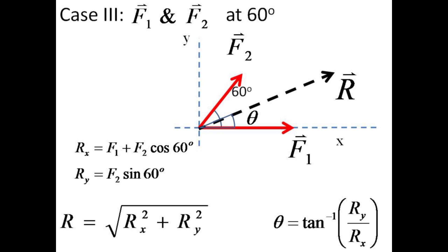Rotate the force F2 over to a 60 degree angle. Here the x component of R is F1 plus F2 cosine 60, and the y component of R is F2 sine 60. This gives a prediction for the magnitude and direction of R.